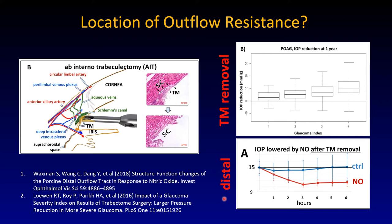We found that in the porcine eye model, when the trabecular meshwork is removed, one can further drop eye pressure by perfusing nitric oxide. This is surprising — it means there must be a resistor somewhere between the outer wall of Schlemm's canal and the episcleral venous system that responds to nitric oxide. Other labs have shown this as well, and I will show some data a few slides down the road.